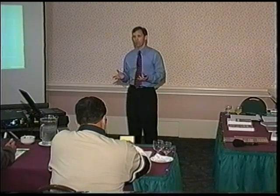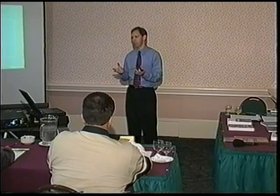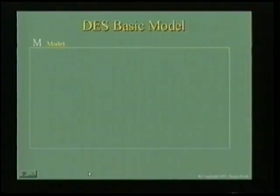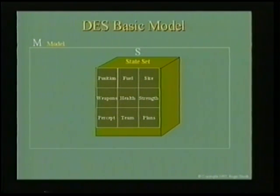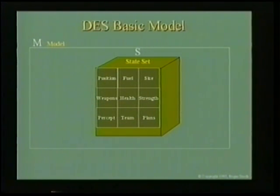The first component is the model itself. You define a boundary which defines what is inside your simulation and what is outside — essentially the shell or box into which you put the rest of your simulation. Inside, you put a bunch of state variables: the attributes of the objects you're modeling. In a military example, an object might have position, fuel levels, size, weapons, perception, health, strength, and plans — its formal state set.